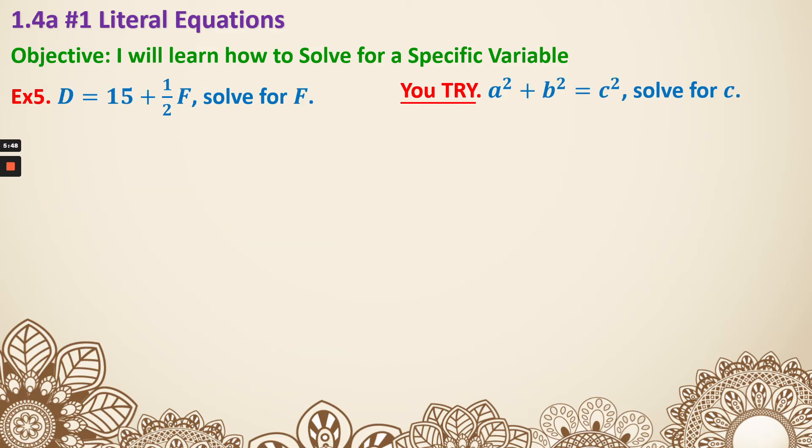Now number five. We're solving for f. That means we need to get rid of the 15 and the ½. So in order to start getting rid of things, some of you may think, oh, I'm just going to subtract 15 on both sides. That is totally fine. That will give you D - 15 = ½f.